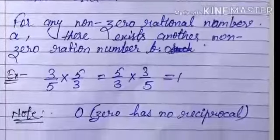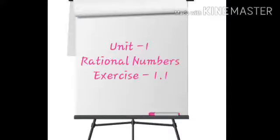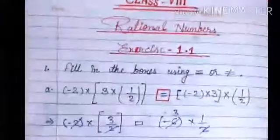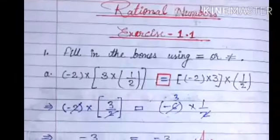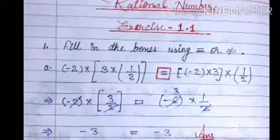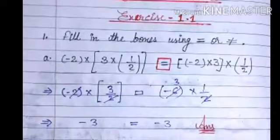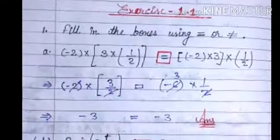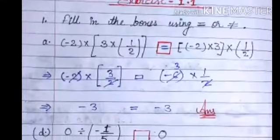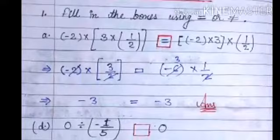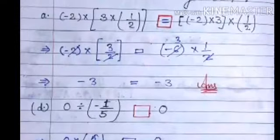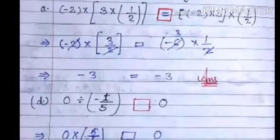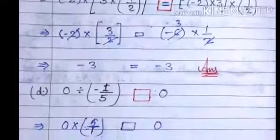Students, we have learnt all the needed concepts for this unit, rational numbers. Now let's come to Exercise 1.1. The first question is to fill in the boxes using equal or not equal. The first part: minus two multiplied by three multiplied by one upon two — by solving, we get minus three on both sides, so we will put an equal sign in the box.